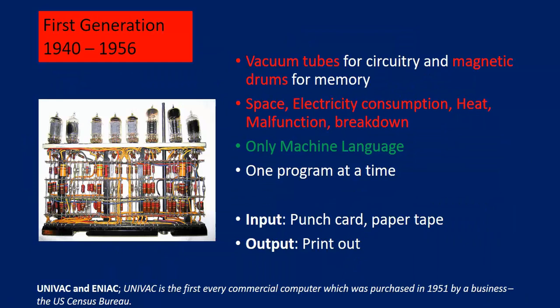The first generation of computers spans 1942 to 1956. In that generation, vacuum tubes were used for circuitry and magnetic drums for memory. The problem was it needed huge space, had high electricity consumption, malfunction due to heat, and breakdown. Only machine-level language was available — no high-level language, one program at a time. Input had to be given using punch cards or paper tape and output came as printout. UNIVAC and ENIAC are first generation machines.